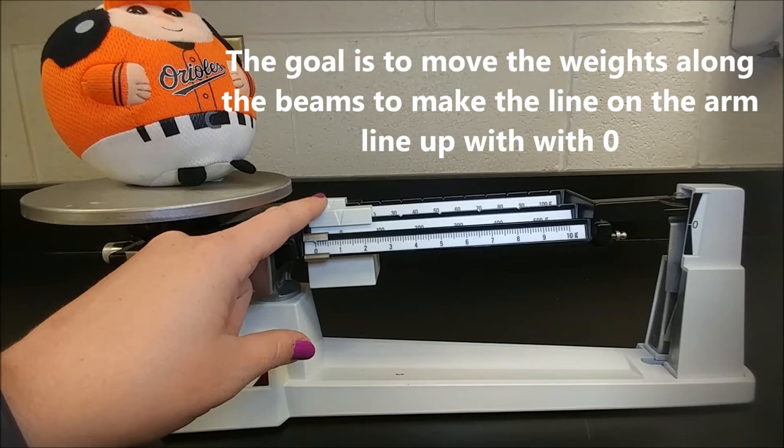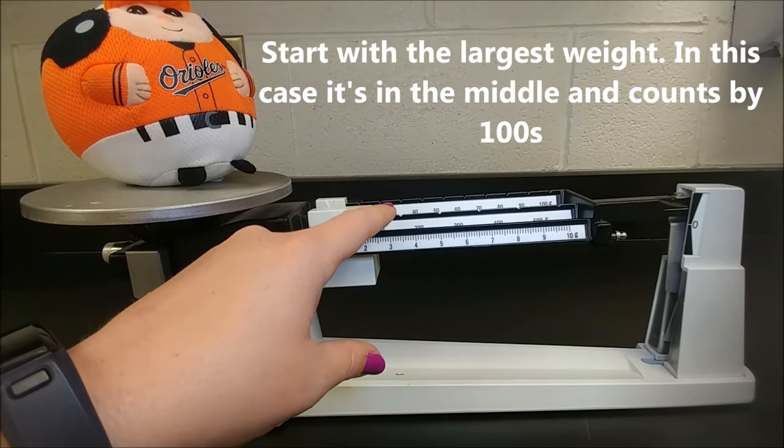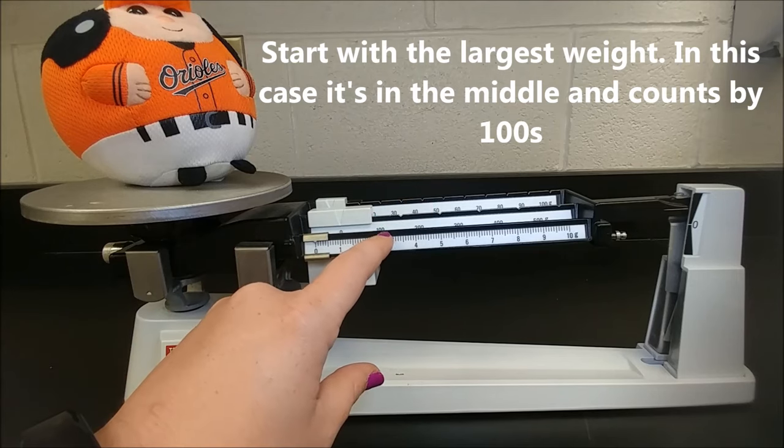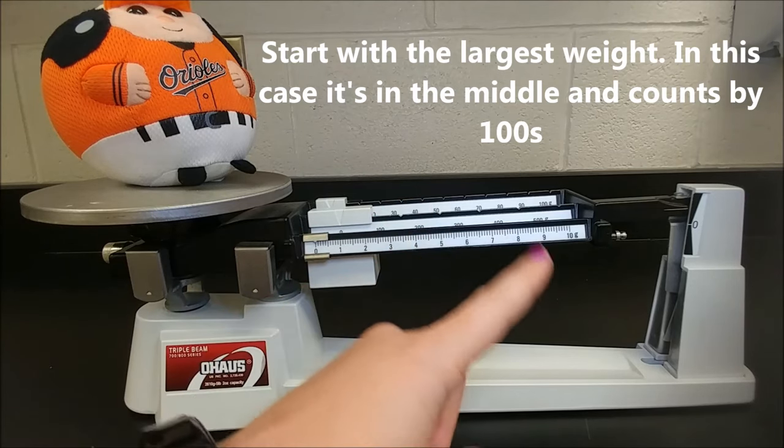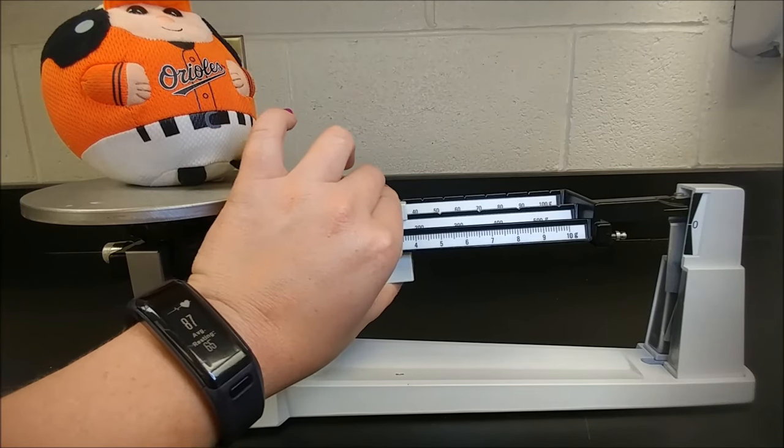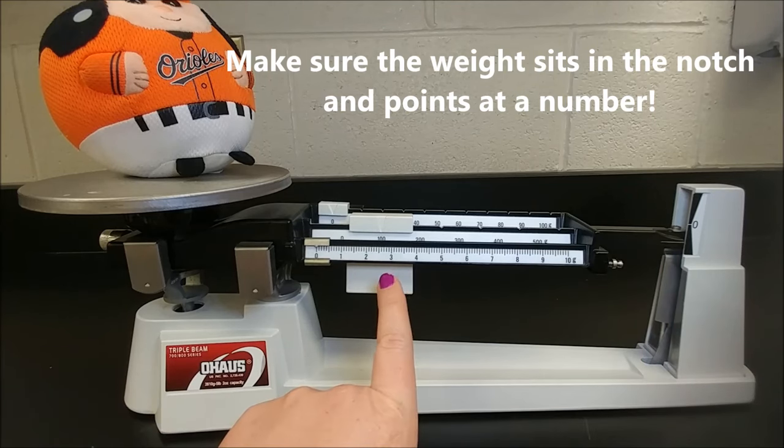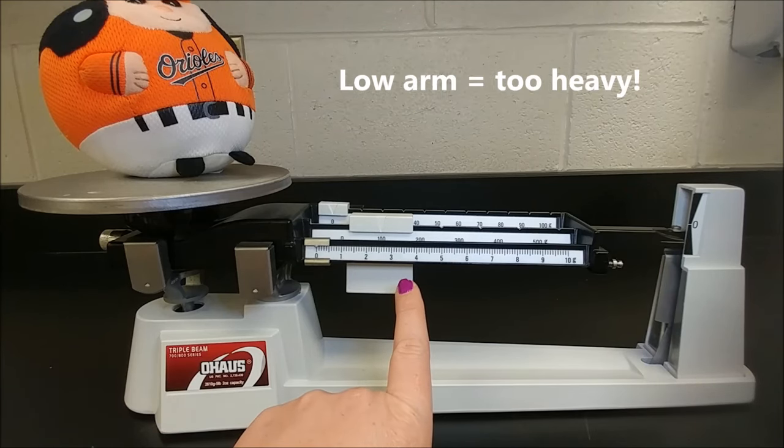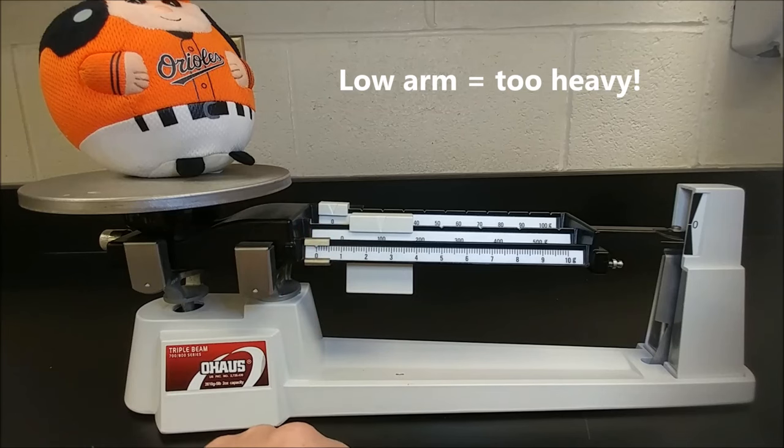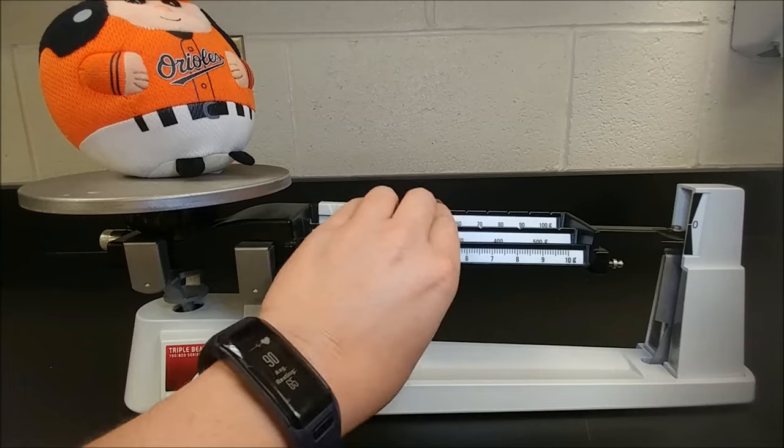We always start with this middle bar. This is the one that measures by hundreds. You can see each notch has a different number on it. The next notch is 100, then 200, then 300, all the way on. So I'm going to move this first to the 100. Notice how the arm dropped to the bottom. This means that number is too big. The Oriole bird ball actually has a mass that's less than 100, so I'm going to move that back.